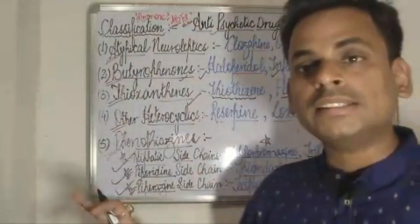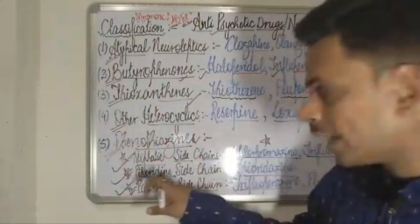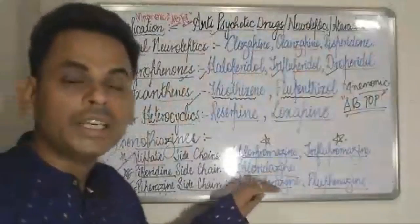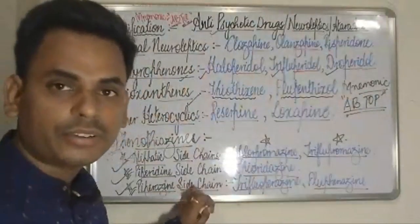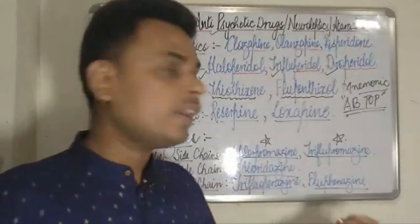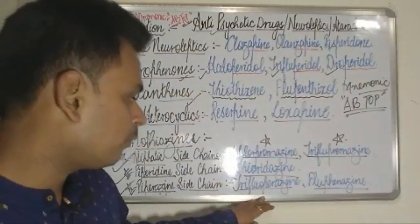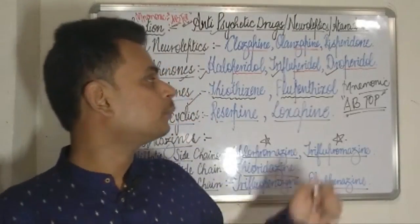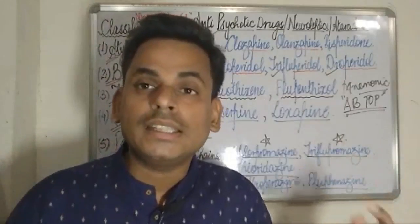Moving on to the second subclass — the piperidine side chain phenothiazines. The famous drug under this category is thioridazine. Moving on to the last subclass — the piperazine side chains — under which we have two famous drugs: trifluoperazine and fluphenazine.